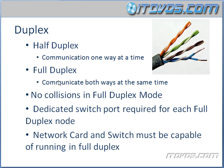Then there's full duplex. Full duplex is going to use two twisted pairs so that communication can go either way. Communication going out will use one twisted pair, and communication coming in will use the other — they'll never run into each other. We can think of full duplex more like a phone, where you can actually talk at the same time and hear each other. So there are no collisions in full duplex mode.